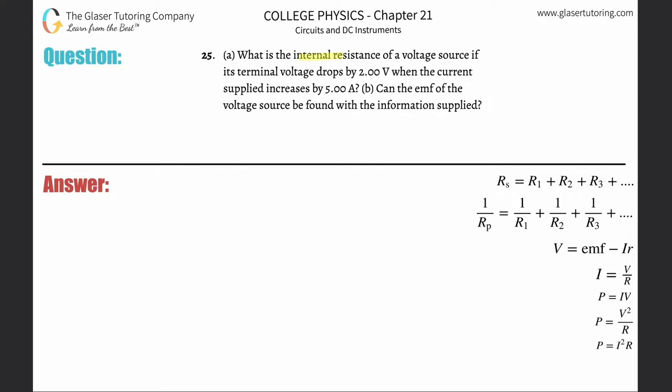Number 25, letter A. What is the internal resistance of a voltage source if its terminal voltage drops by 2 volts when the current supplied increases by 5 amps?